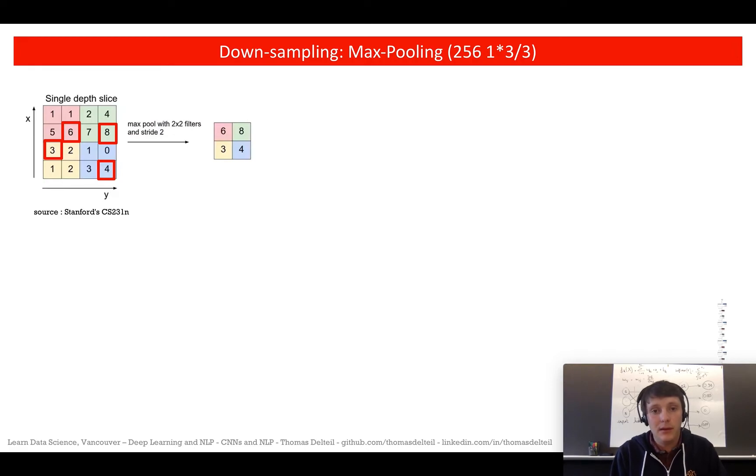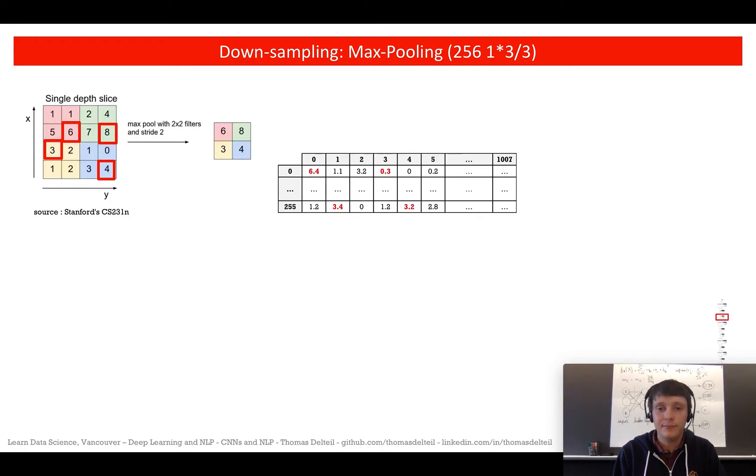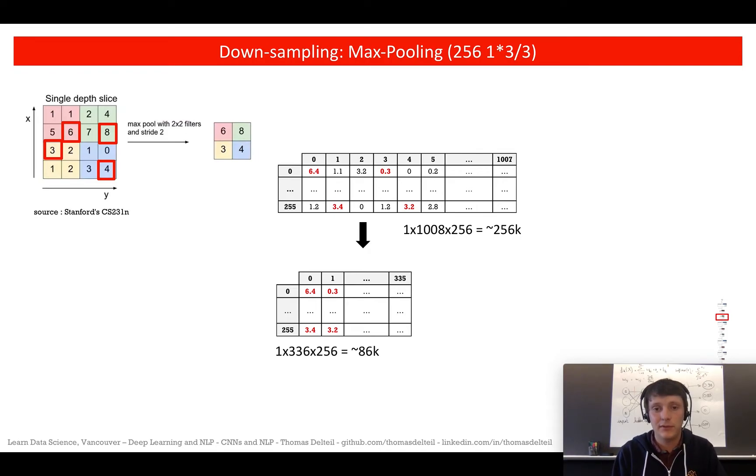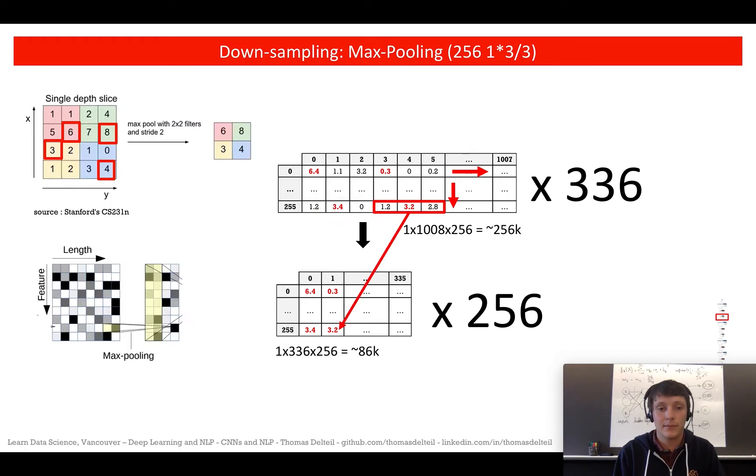We then enter the down sampling or the max pooling operation. If you remember from what I was talking about at the beginning, you have your feature maps and we're going to apply a one by three kernel on all features. This means that the maximum number in here is going to be there, and then we're going to use a stride of three, which means the next number is here. So we're going to divide by three the number of elements in our feature maps. We go from 256 elements to 86.